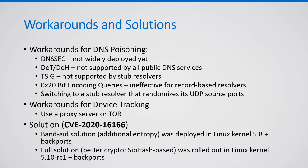The workaround for device tracking is using a shared forward HTTP proxy server or Tor. The real solution, of course, is to change pRandomU32's implementation to a stronger one, which is exactly what the Linux kernel team did for Linux kernel version 5.10, backporting it to all long-term support branches.